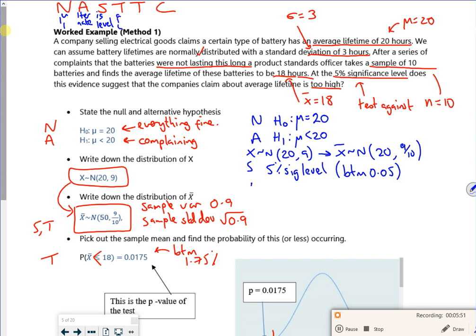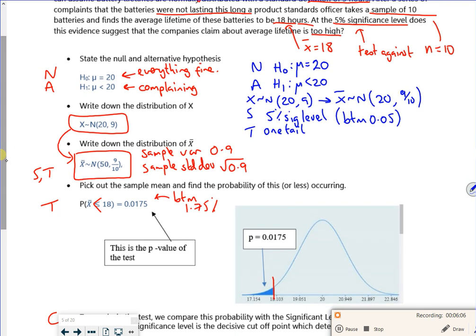And then T is my TAIL. So T, so it's a one TAIL test because it's less than. So it's just a one TAIL test. And then the other T is my test stat. So this is my test stat. So the probability that X bar is less than 18, which we've worked out as 0.0175.